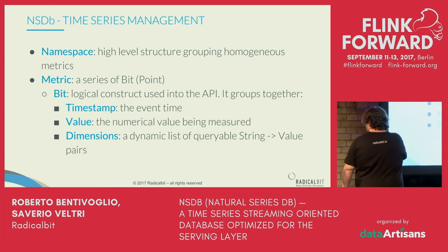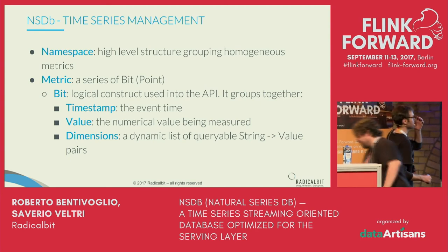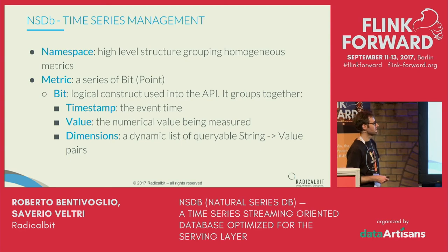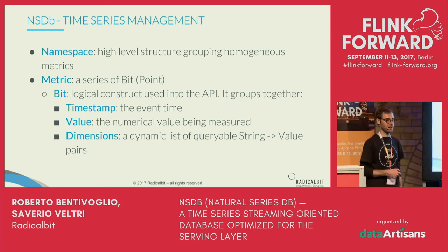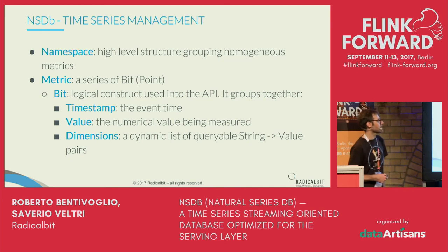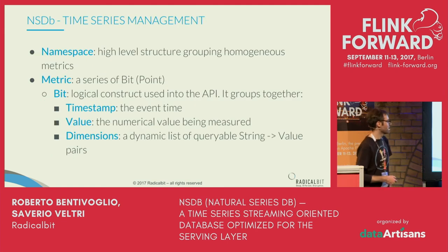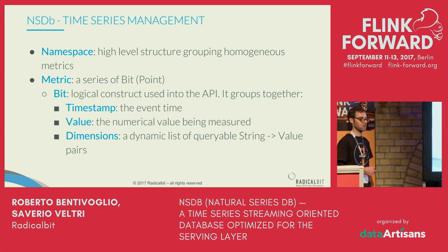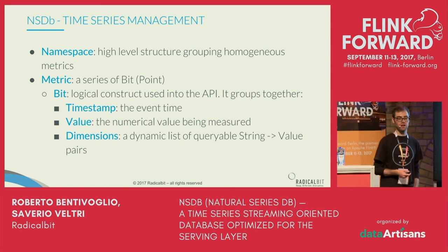Now let's talk about our data structure inside the database. We start from the namespace — the highest-level construct. A namespace is like a keyspace in Cassandra or a database in a relational storage system. Within that we have metrics, which are like tables in the relational world. Metrics are a series of points we call bits inside the database, recalling the name of our company. Each bit has a timestamp, because we are a time-series database.